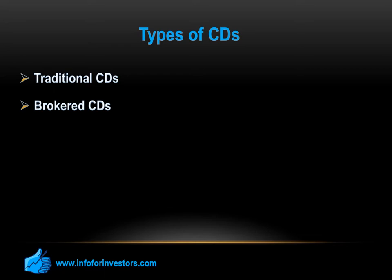CDs which do not offer a fixed interest rate are called variable or flexible rate CDs. These usually carry a higher risk and potential for good returns. Normally, a person would buy a variable rate CD with a longer term. There is an option of bumping up, which allows the account holder to adjust the interest rate according to market conditions. It's important to know how many times you can bump up and when, including when the interest is distributed. I would recommend this type to people who know the market very well, since a person should know when exactly to adjust the interest rate and benefit the most.